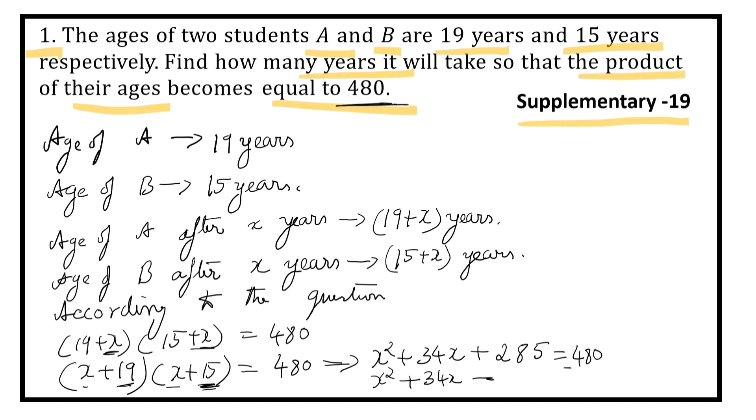Because it transposes to the left hand side, we have to subtract 285 from 480. The bigger number sign is negative.